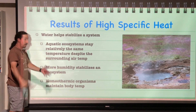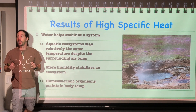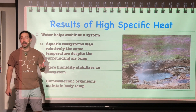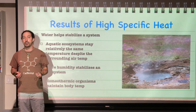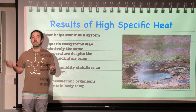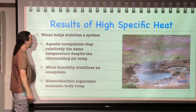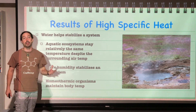High specific heat also helps homeotherms — warm-blooded animals — maintain their body temperature. It helps us maintain body temperature because water has a high specific heat: it takes so much energy to warm it up, and that means to cool it down, it would have to lose a lot of energy as well. So it's a very strong stabilizing force.